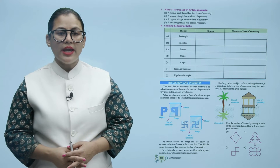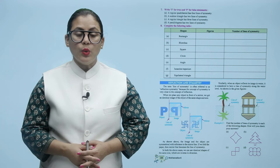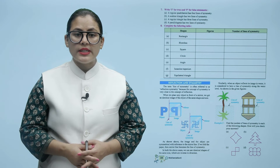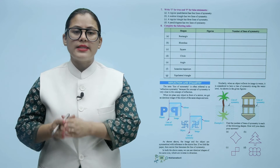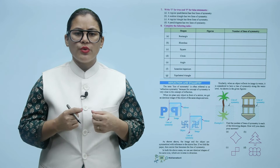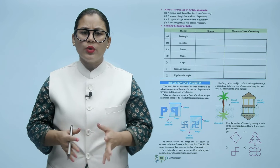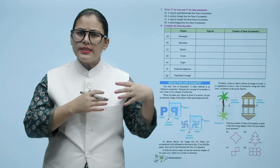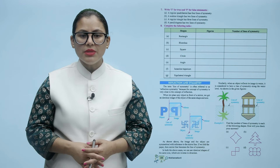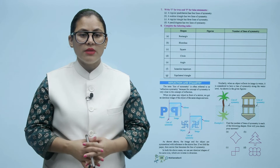The term line of symmetry is often referred to as reflection symmetry, because the concept of symmetry is very close to the concept of reflection. When we place any object in front of a mirror, we get an identical image of the object of the same shape and size. Line of symmetry refers to reflection symmetry. The image and the object are symmetrical with reference to the mirror line. If we fold the paper, the mirror line becomes the line of symmetry.